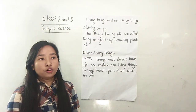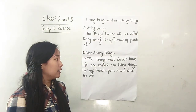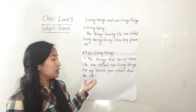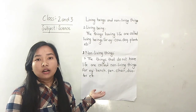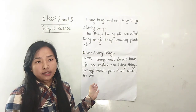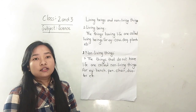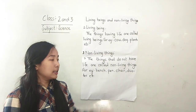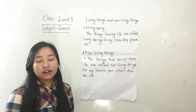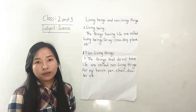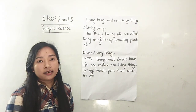Living things reproduce. Living things are animals, plants. Animals produce their young ones directly.